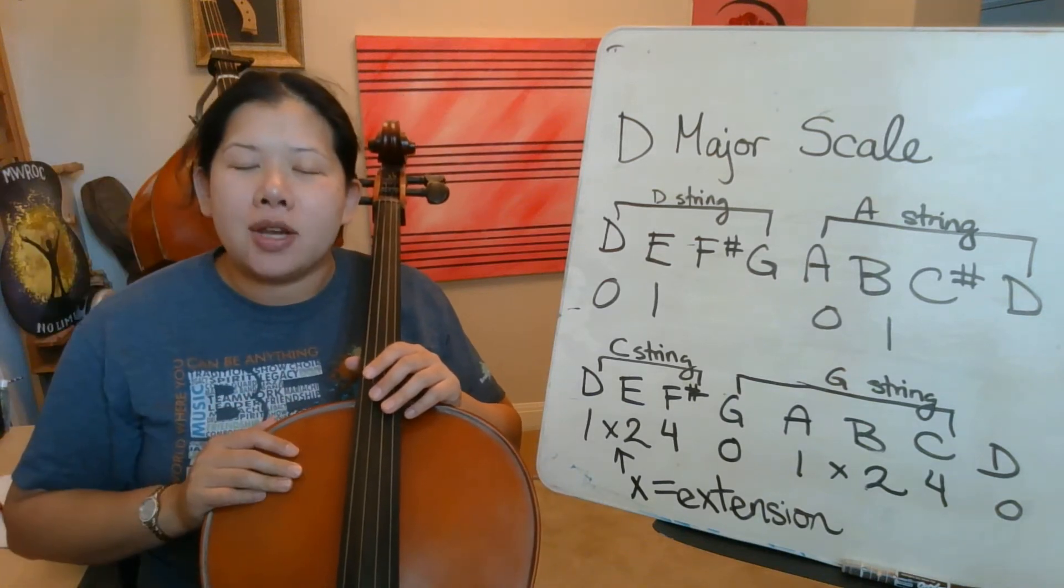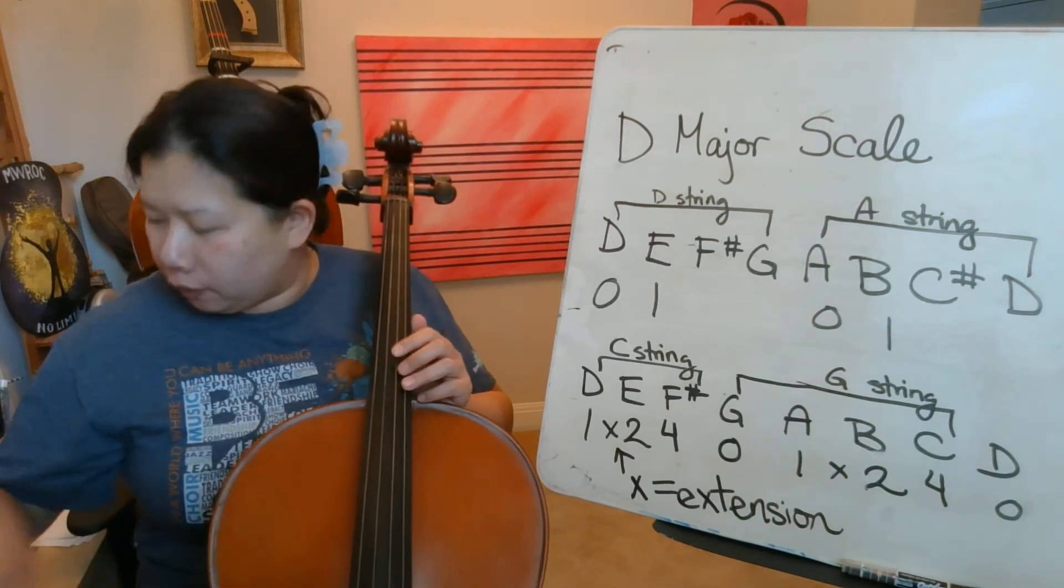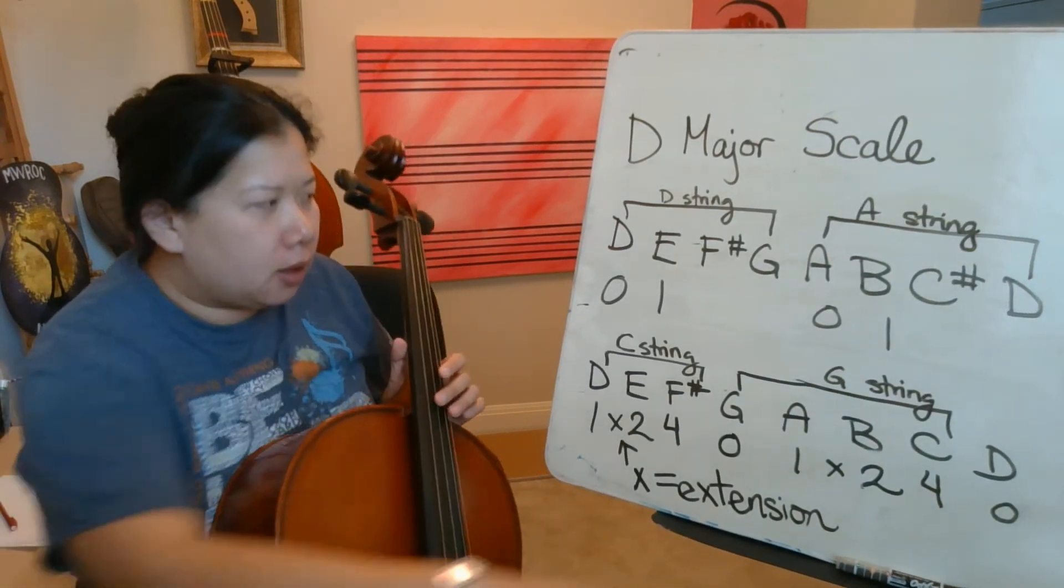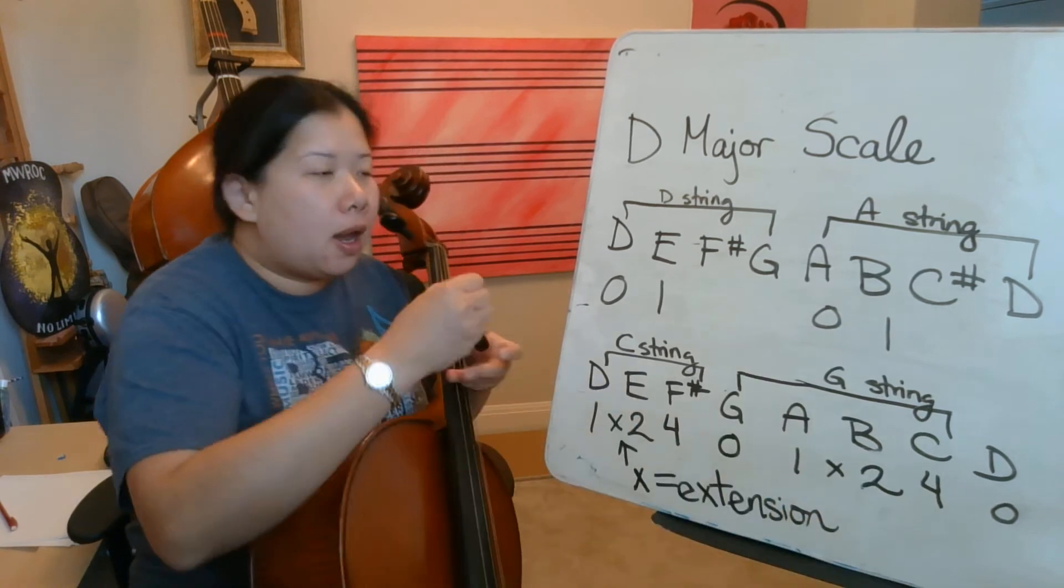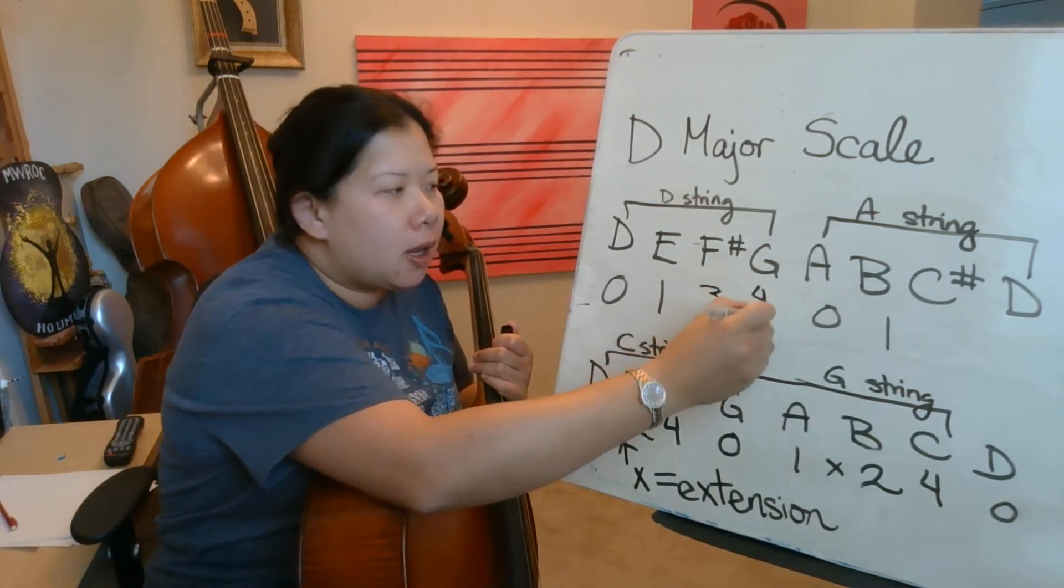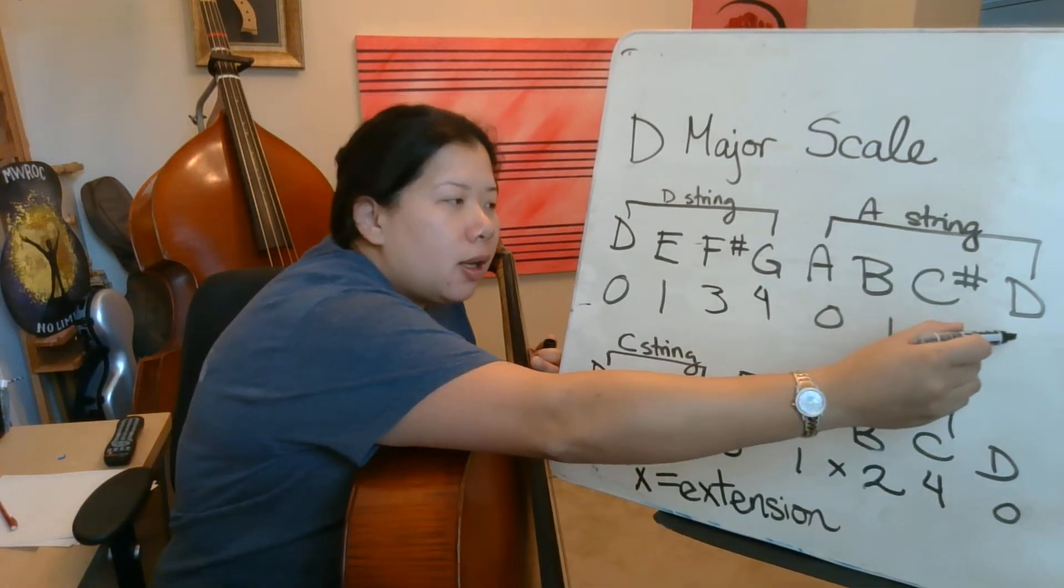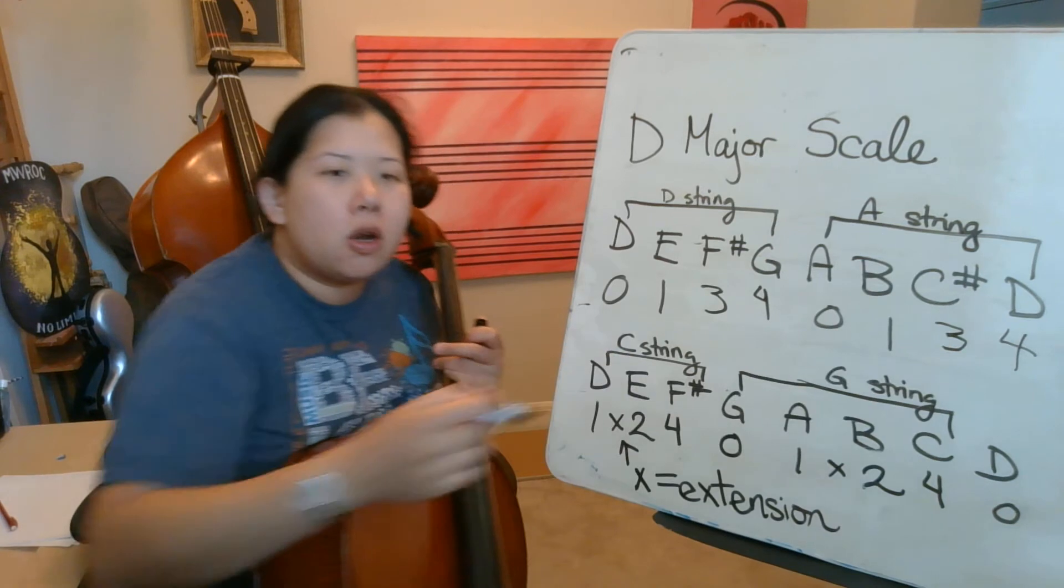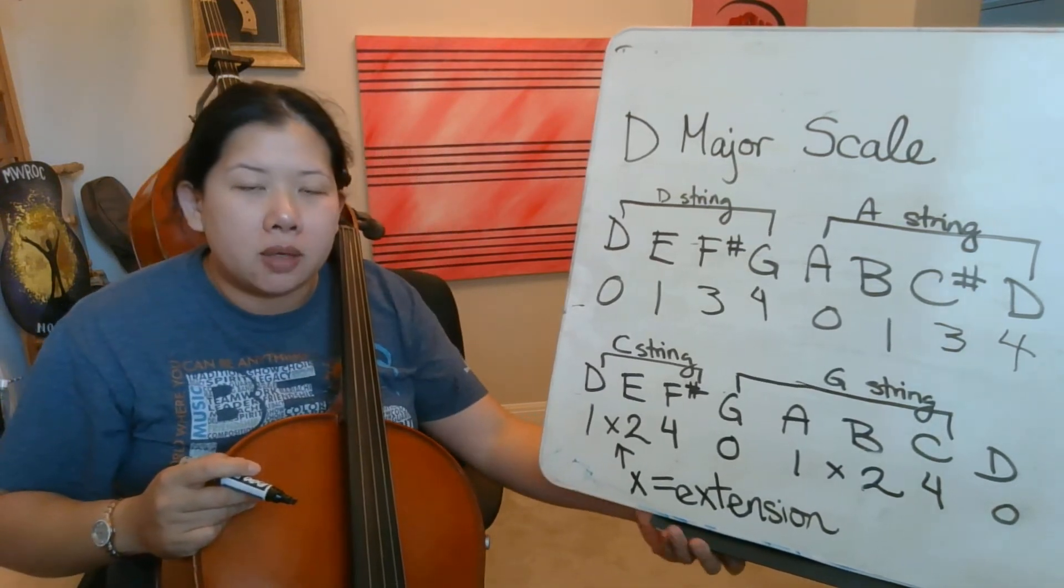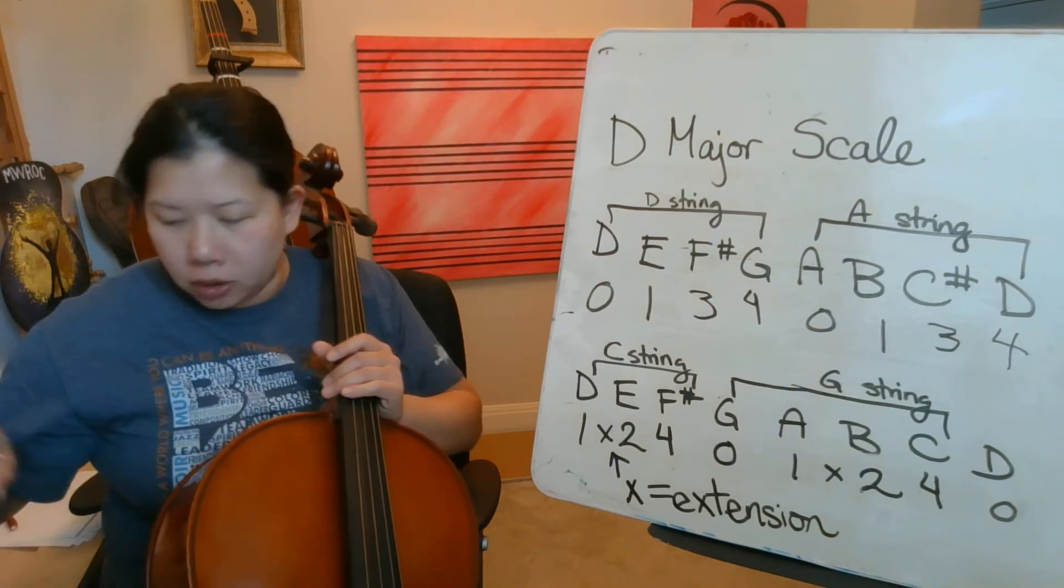Hi, we're going to do the D major on the cello. So let's go review the notes. Oops, I forgot to write the names. So we have D, E, F sharp is third finger, four fingers is G, A, B, C sharp is third finger, D. If you don't know your note names, take a moment right now, pause the video, and write down the fingerings and numbers too.